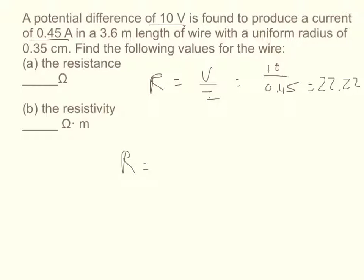Then it asks for the resistivity. We just did the same thing in the last equation. Resistance equals resistivity times the length of the wire over the cross-sectional area. The units are in ohms times meters, so all of our stuff has to cancel out in ohms and meters. We've already got our resistance in ohms.